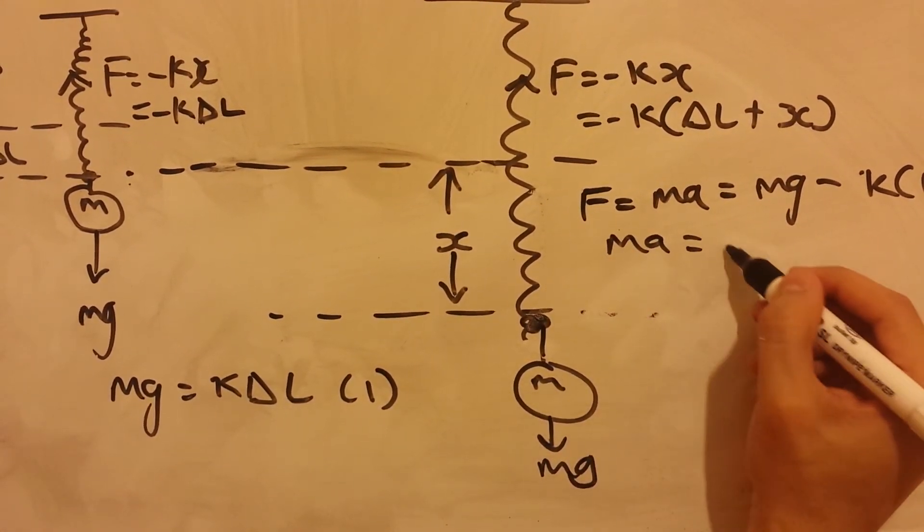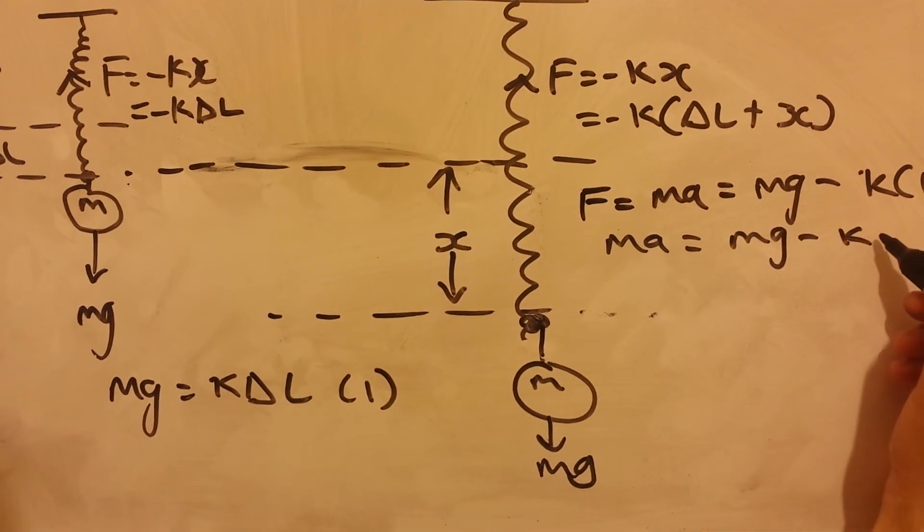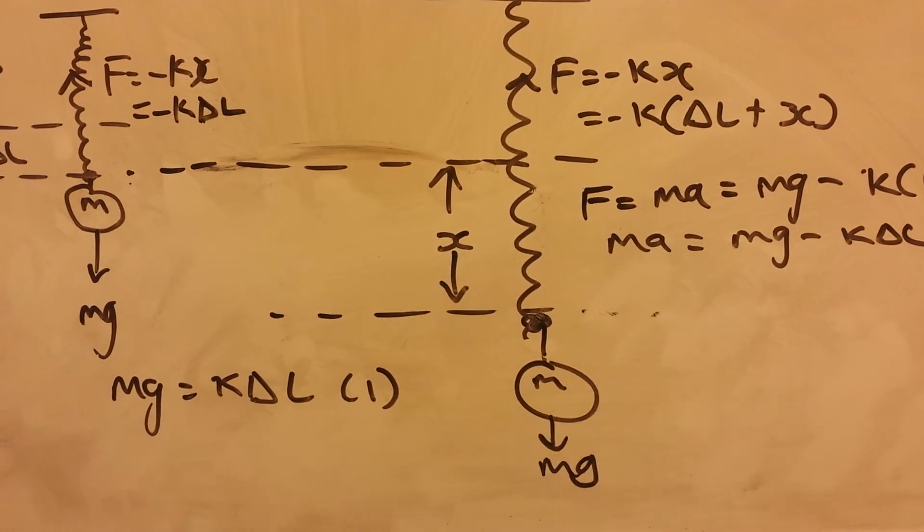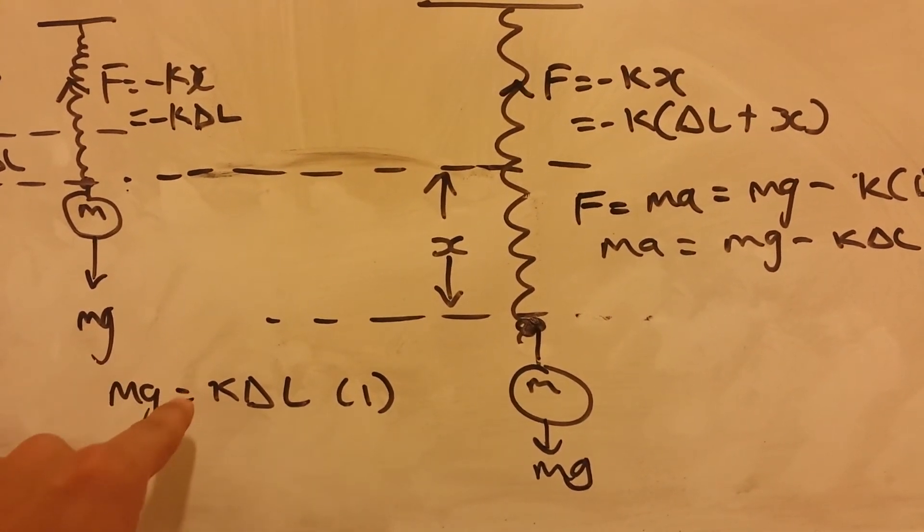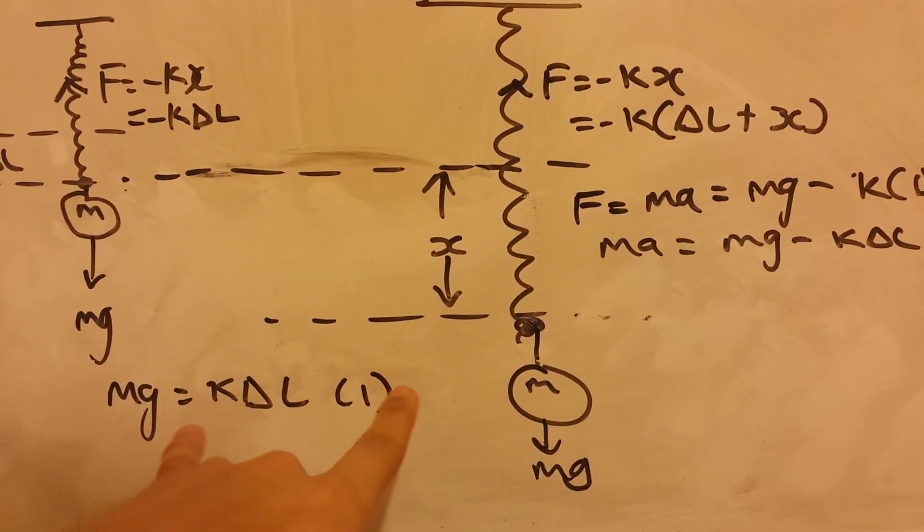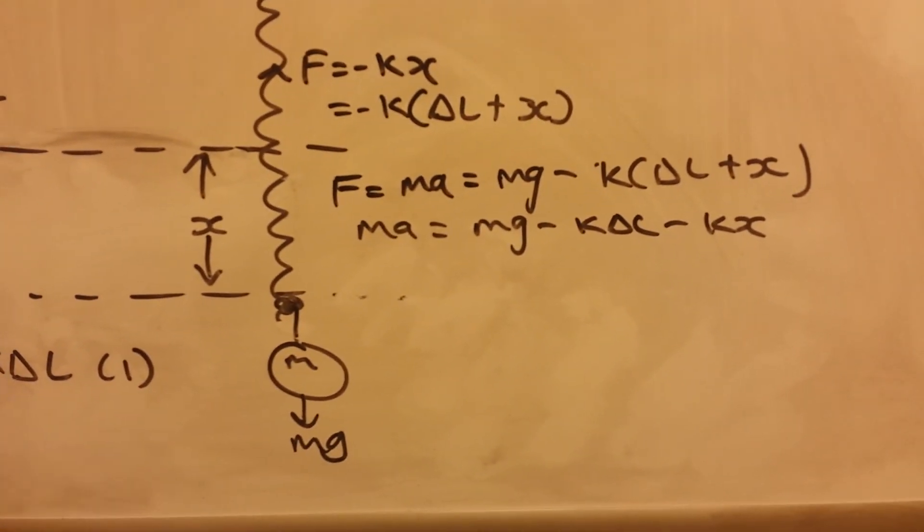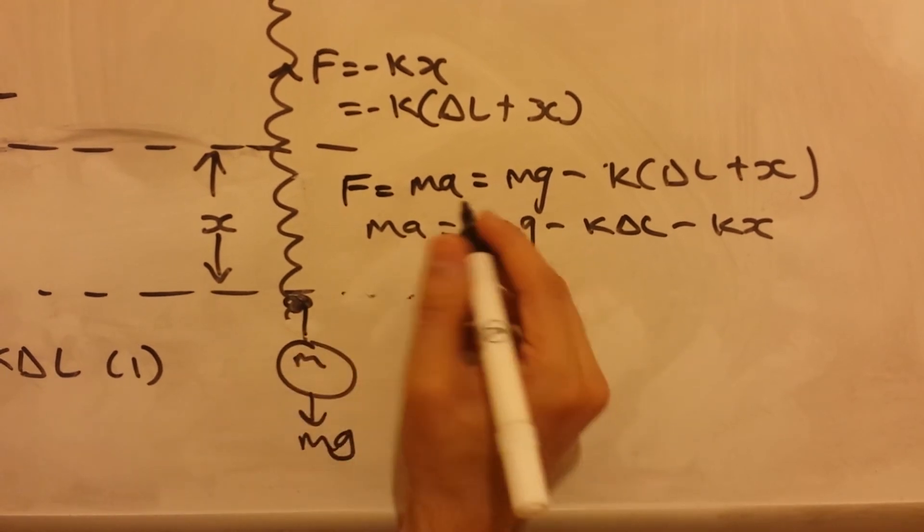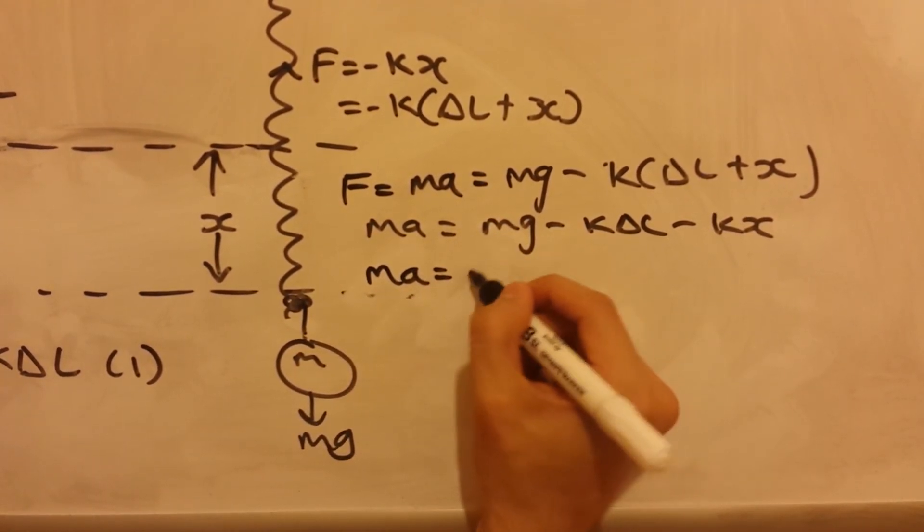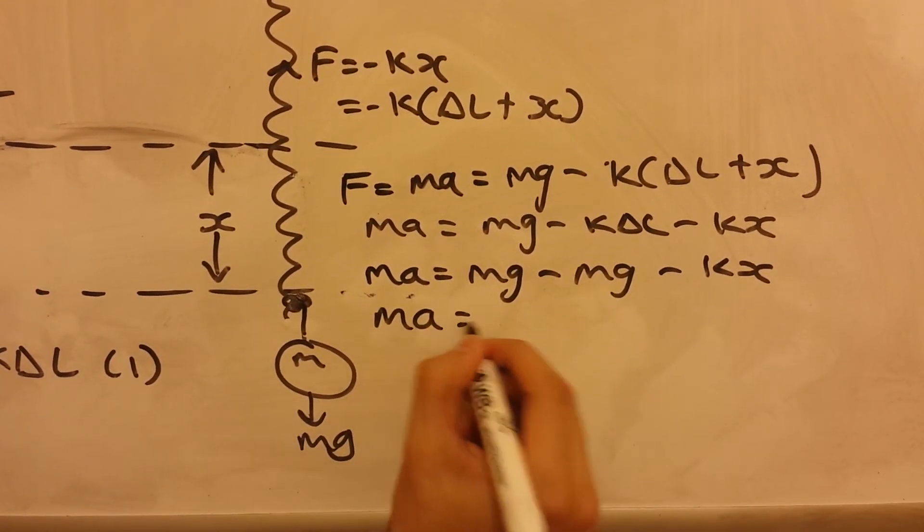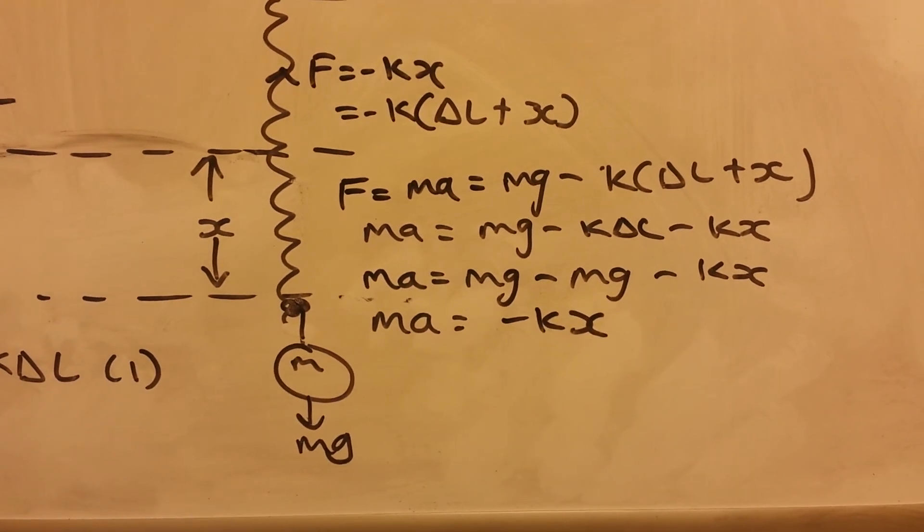And that can be written as ma equal to mg, take away k times the infinitely small of L, take away kx. And we know that mg, when the system is in equilibrium position, mg is equal to k infinite times by infinitely small of L. So we can substitute this equation into this. So ma equals to mg, take away mg, take away kx. And that can be written as ma equals to minus kx.